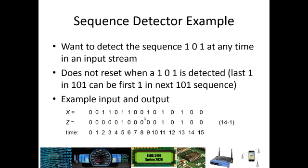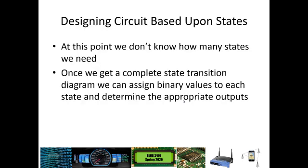We also talked about how the sequence detector does not reset when it gets a 1, 0, 1. In this case, we have 1, 0, 1, and this last 1, which was the last one in this 1, 0, 1, is actually the first one in the next 1, 0, 1. So both of those count as 101 sequences.